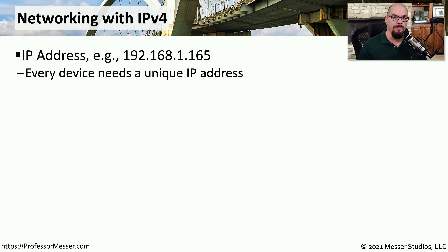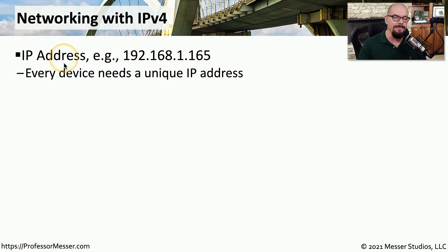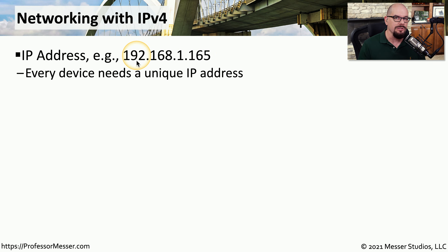If you're configuring IPv4 on a computer, you need to configure three very important addresses. The first address is an IP address. This is an address that uniquely identifies this device on the network. If you look at your IP address and it's a number like 192.168.1.165, that is the unique address that nobody else on your network has. This is how other devices will address or send information to your computer.